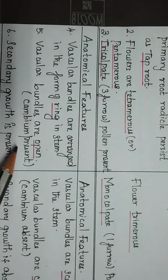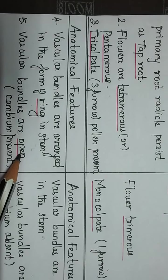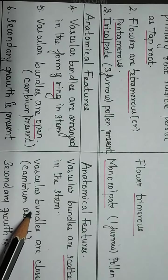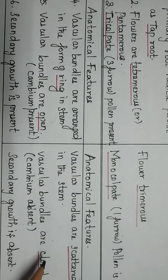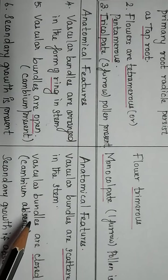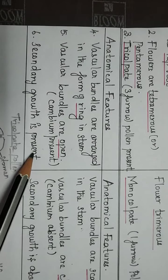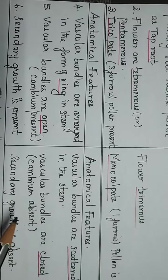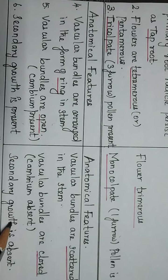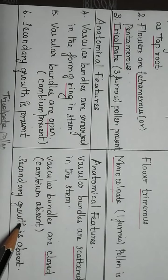Vascular bundles are open in dicot plants — that is, cambium is present between xylem and phloem. In monocot plants, cambium is absent, so the vascular bundles are closed. Secondary growth is present in dicot plants. In monocot plants, secondary growth is generally absent because they are one- or two-year plants.